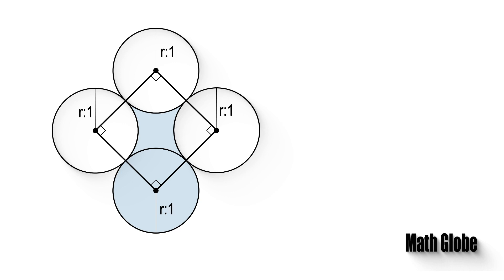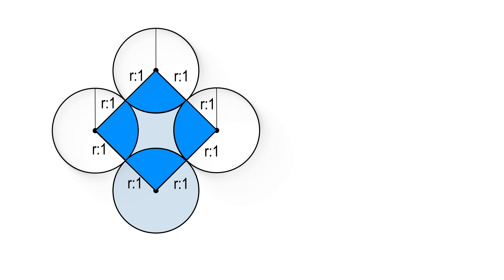As seen, we formed a square with the length of the side two units. Now, let's check what we have. We have four quarter circles inside and three quarter circles outside of this square.